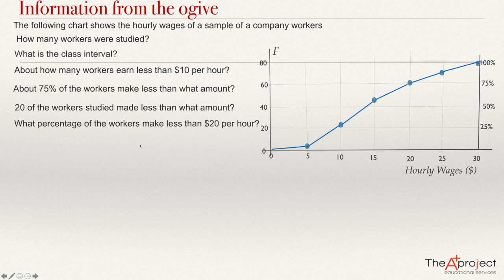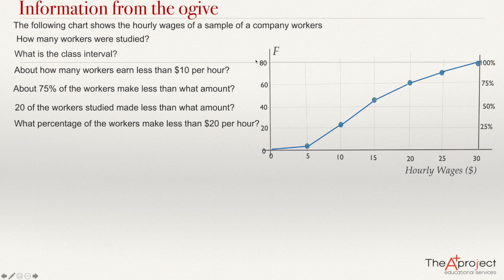Let's answer the first question: how many workers were studied? This information is in the ogive. Because it is the cumulative frequency, and $30 is the maximum wage, it is related to the number 80. In an ogive, the cumulative frequency of the highest point is the total number of elements in the sample. So the answer is N equals 80.